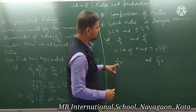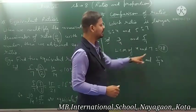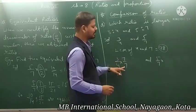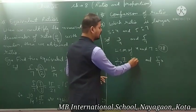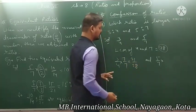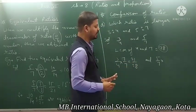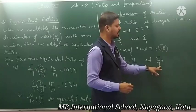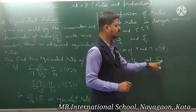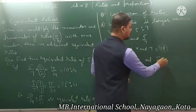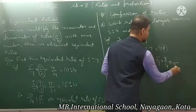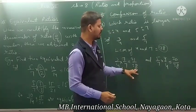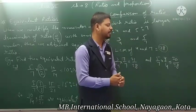Iska matlab hai aapke paas denominator hona chahiye dono ratio ka — woh kya hona chahiye — 28. To aapne dekha 3 upon 4, jiska denominator 4 hai. Ab 4 se denominator 28 banana hai, to 4 ko 7 se multiply karenge. Aur balance karne ke liye numerator ko bhi 7 se multiply kar denge — so 3 into 7 is 21, and 4 into 7 is 28. Means 3 upon 4 ka equivalent ratio nikal liya: 21 upon 28. Now second — 5 upon 7, jiska denominator 7 hai, aur aapko banana hai 28. To 7 ko 4 se multiply karo — 4 se multiply kar diya, to numerator 5 into 4 that is 20, aur denominator 28.